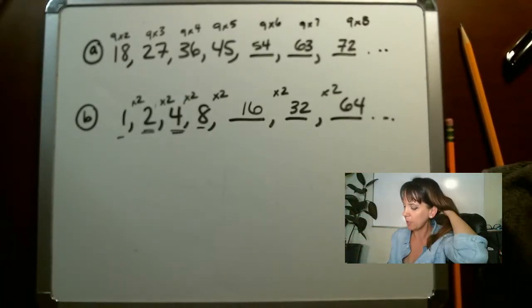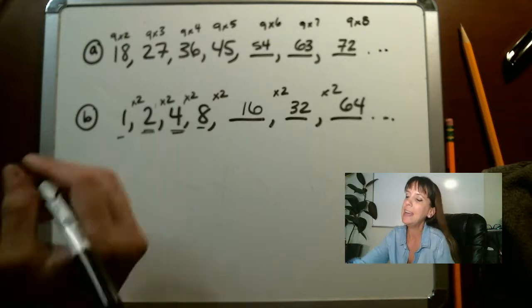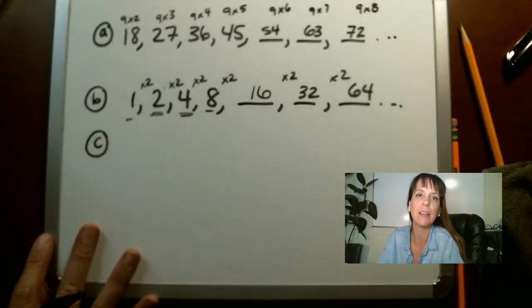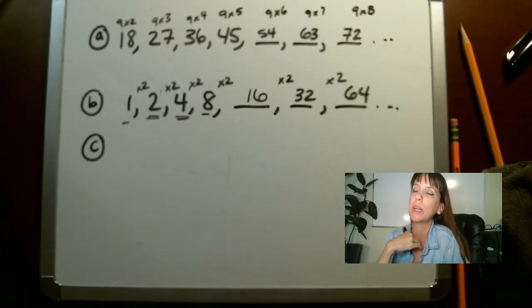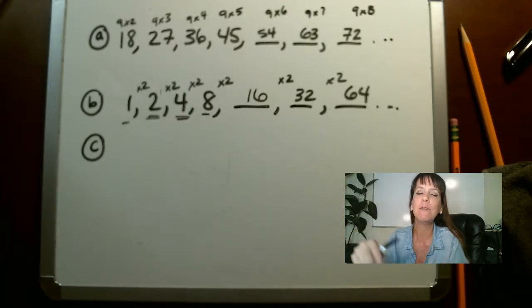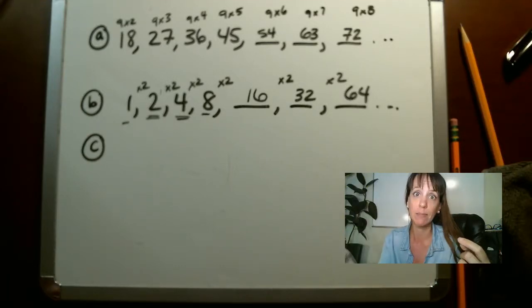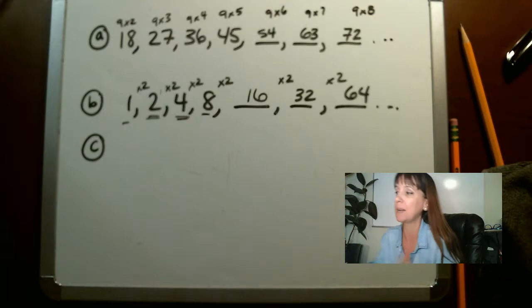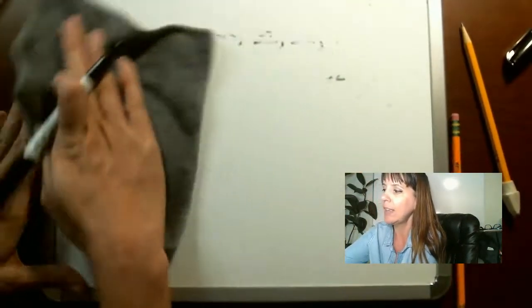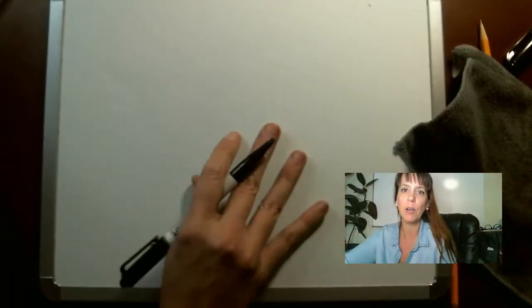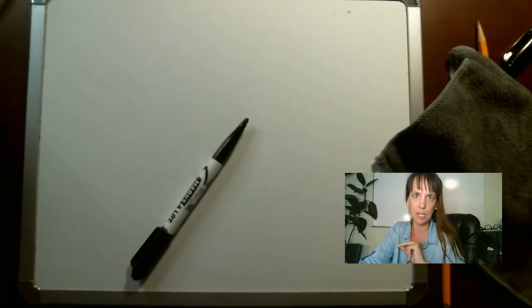For C: think of a whole number, double it, then add one to it. We talked about this before — if you double a number it's always going to be even, and if you add one to an even number it's going to be odd. So for C, it's always going to be odd. You are good to go, guys. If you have any questions, let me know. Otherwise I'll see you for our next lesson. Thanks guys.